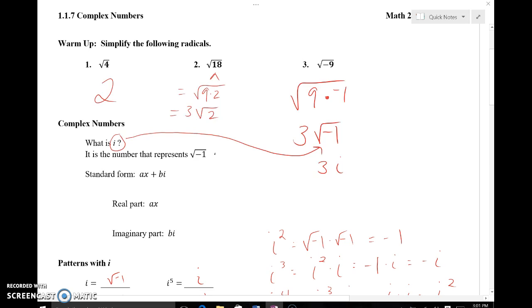But under a larger number system called the complex number system which is bigger than the real number system, it's every real number plus all of these square roots of negative numbers. They do give us the opportunity to find the square root of a negative number and that's using this new number that represents the square root of negative 1, i.